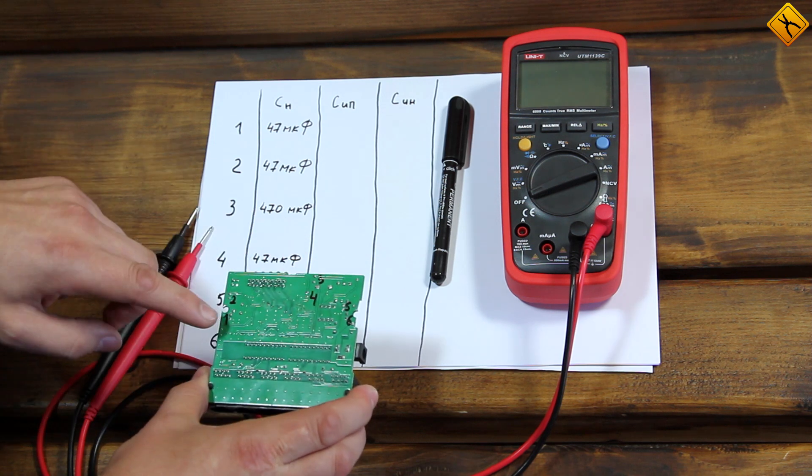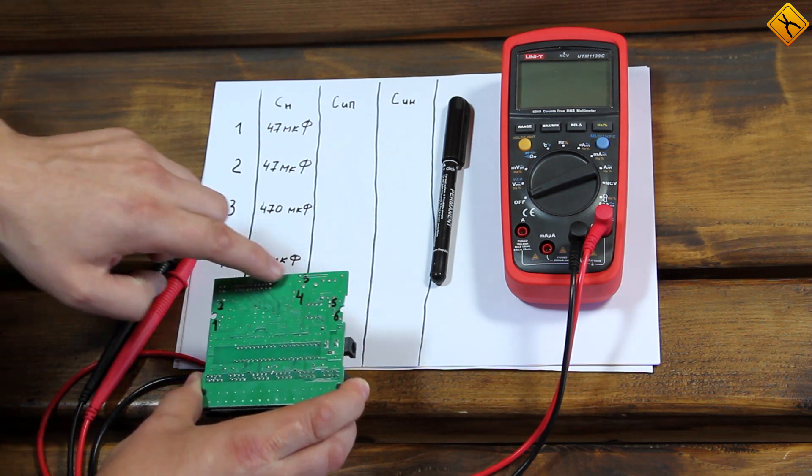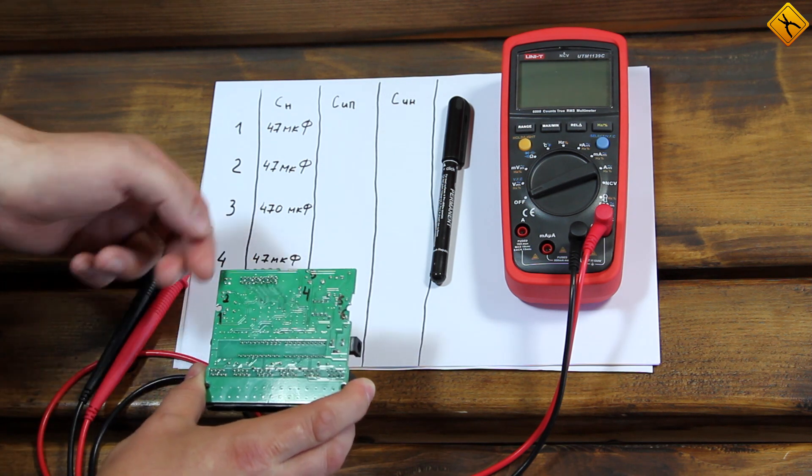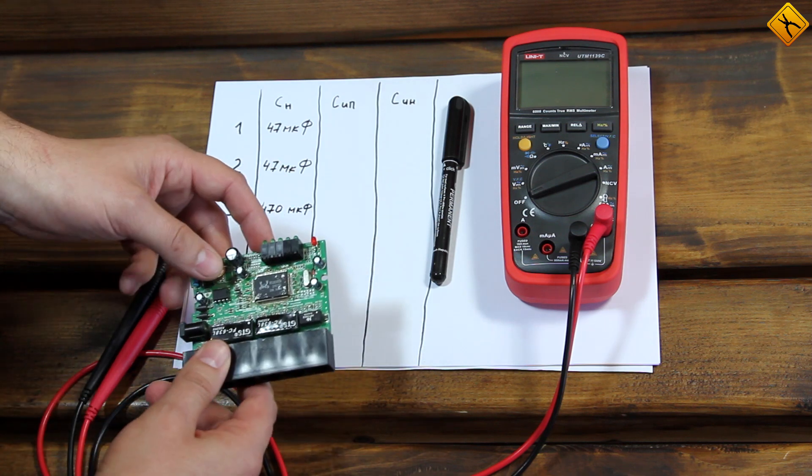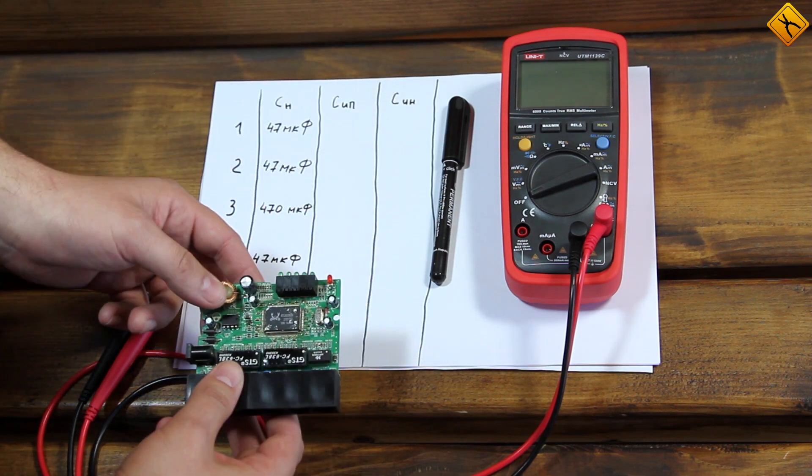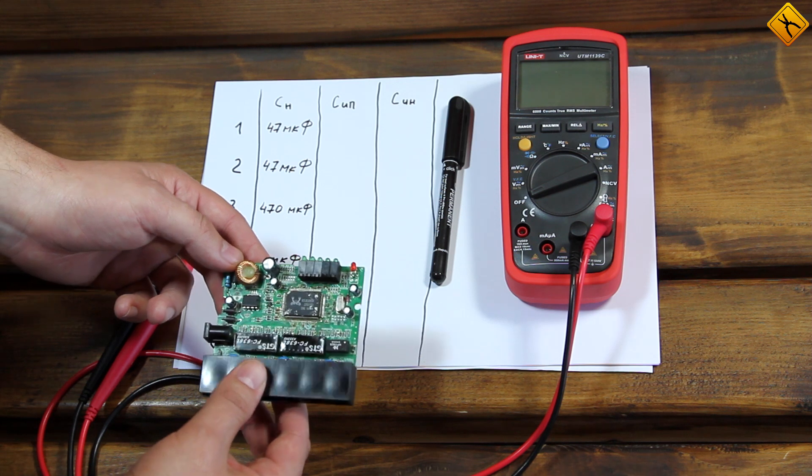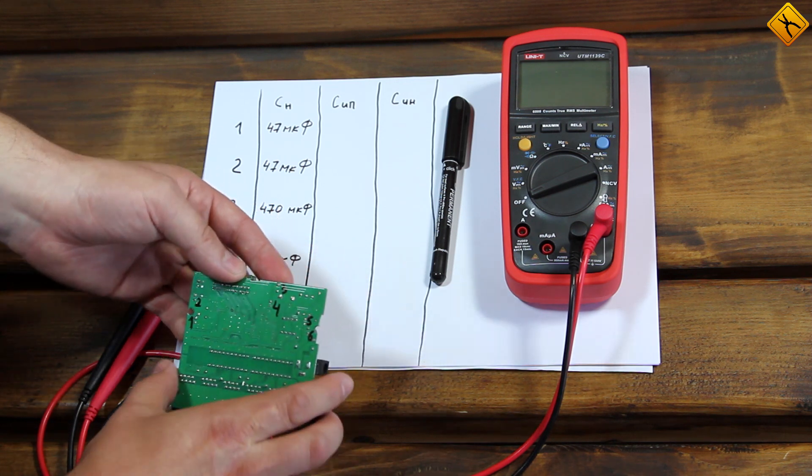In phase two, we will measure the capacitance of those points without desoldering the capacitors. In phase three, I will desolder all capacitors, measure their capacitance as usual, and record the values. We will then compare them to the original values and find a result. Let's begin.